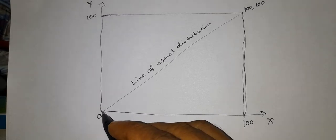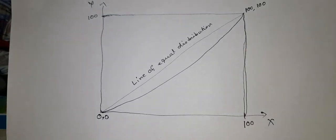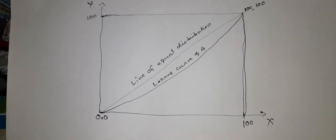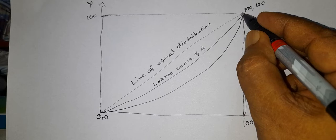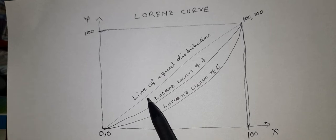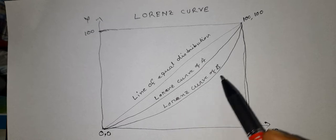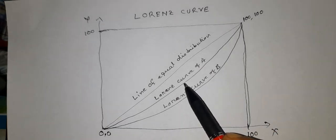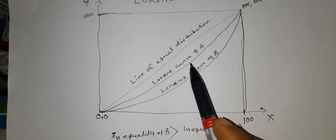Suppose this is the Lorentz curve for distribution A and another Lorentz curve is for distribution B. A Lorentz curve nearest to the line of equal distribution indicates less inequality. So the inequality represented by curve B is more than the inequality represented by curve A. Therefore, inequality of B is greater than the inequality of A.